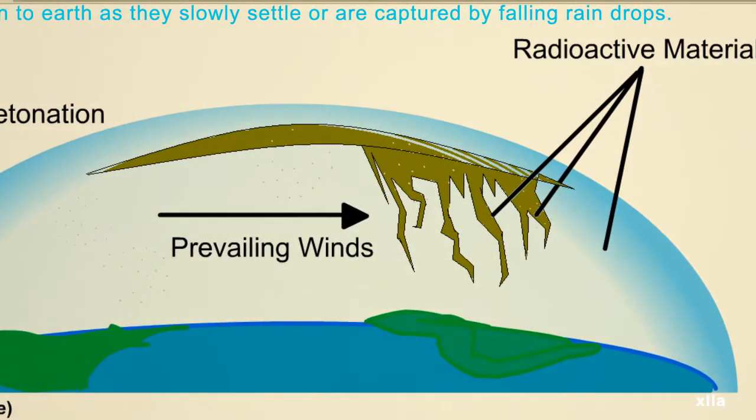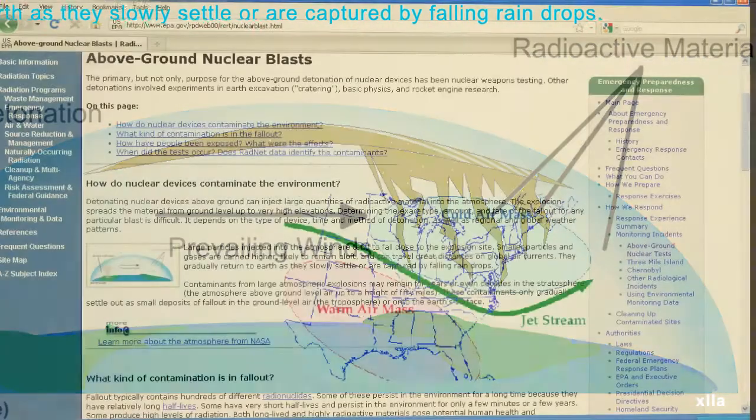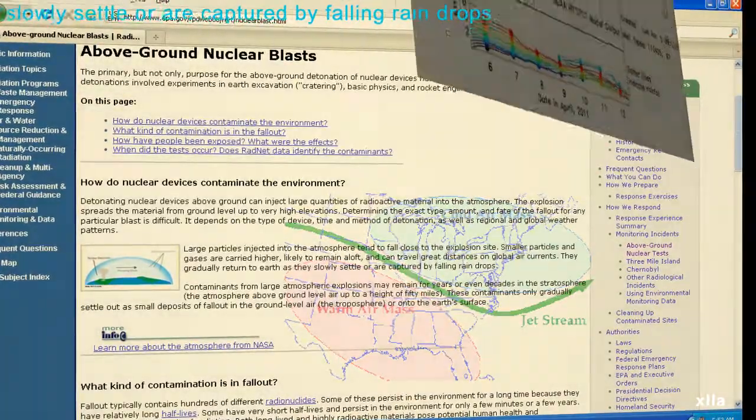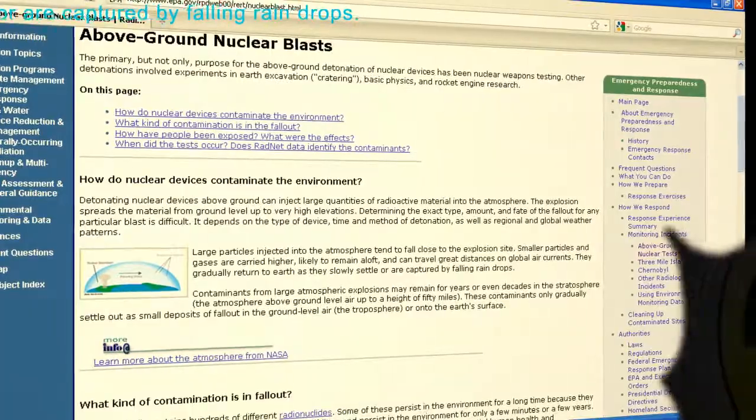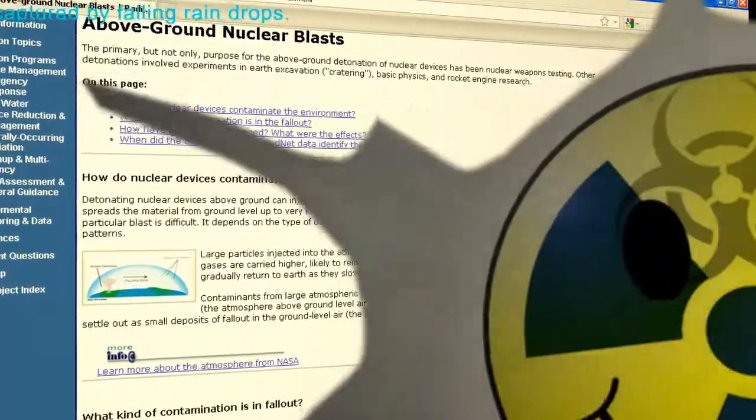They gradually return to Earth as they slowly settle or are captured by falling raindrops. Contaminants from large atmospheric explosions may remain for years or even decades in the stratosphere.